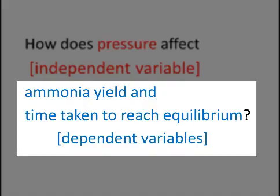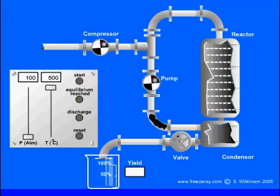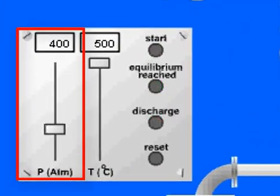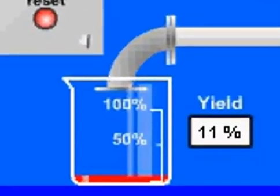and we have two dependent variables: ammonia yield and time taken to reach equilibrium. In the investigation, we alter the independent variable between the treatments,